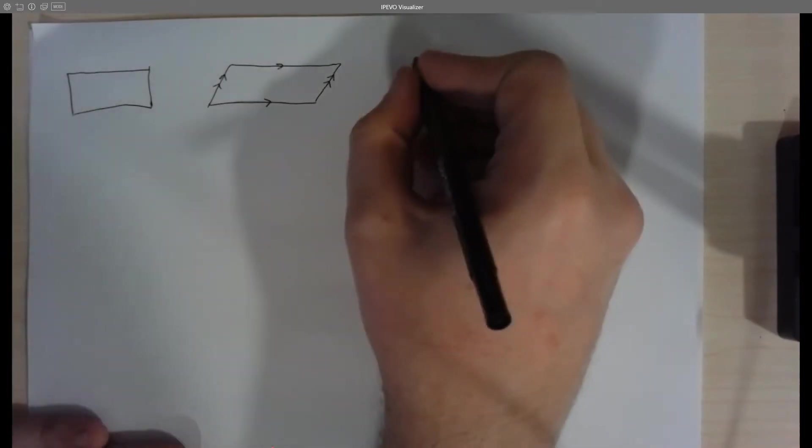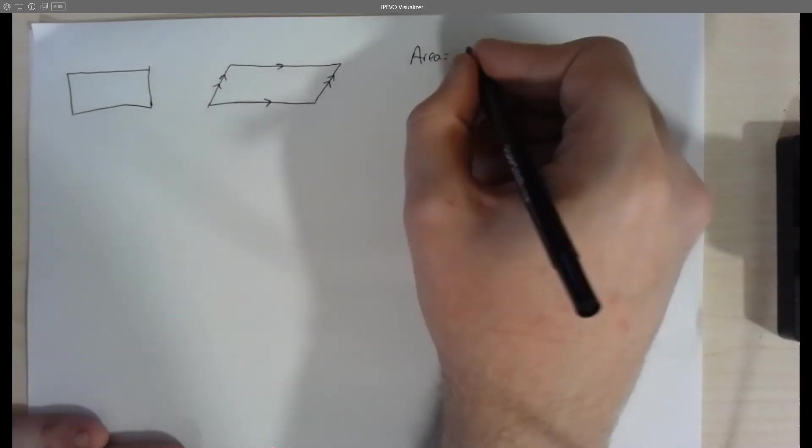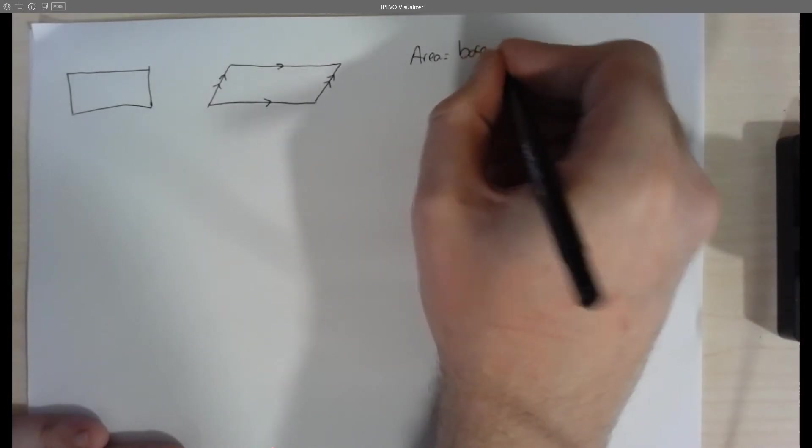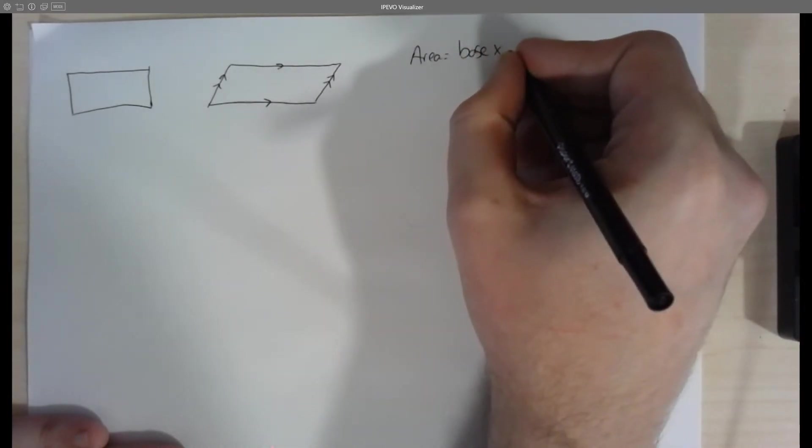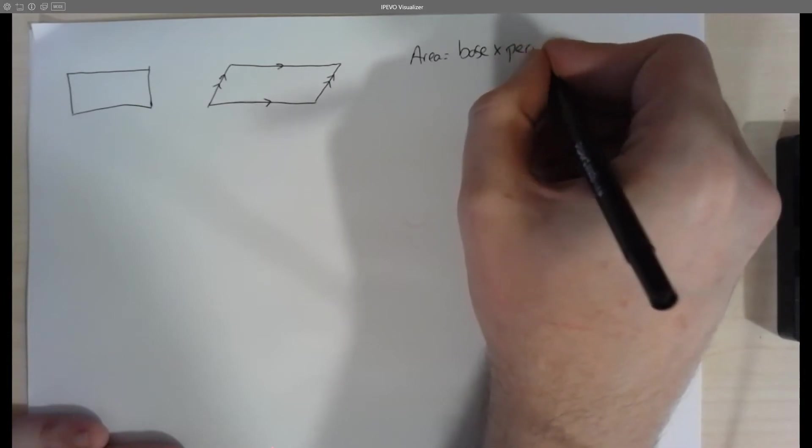And because a parallelogram is very similar to a rectangle, we actually have a very similar formula for the area of a parallelogram. I'm going to give you the area and then I'm going to explain how it works. So the area is going to be equal to the base times the perpendicular height.